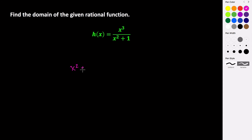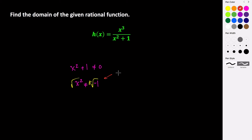We know that x squared plus 1 is not allowed to equal 0. This isn't factorable, but we could solve it using square roots. If I subtract 1 from both sides, I get that x squared is not allowed to equal negative 1. Then taking the square root of both sides, I get the square root of negative 1. But this value is imaginary — it's an imaginary number. When we're talking about the domain of a rational function, this is not accounted for. The domain has to only account for real values that make this 0, so because we get an imaginary value, there's actually no domain restriction.